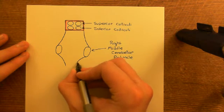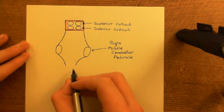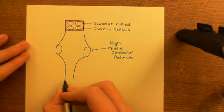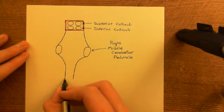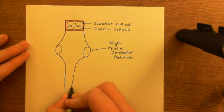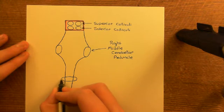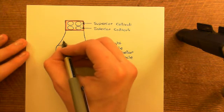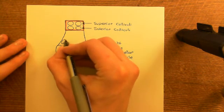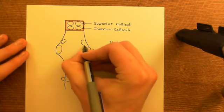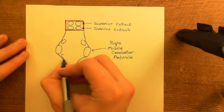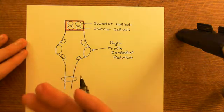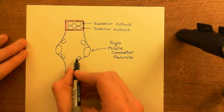Then the pons reconverges to a smaller structure and you've got the medulla below, then the spinal cord below that. I'll note the foramen magnum to orient us. So here are the superior cerebellar peduncles and here are the inferior cerebellar peduncles — those are also points where neurons are going into the cerebellum.